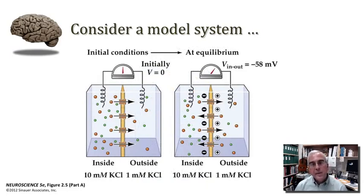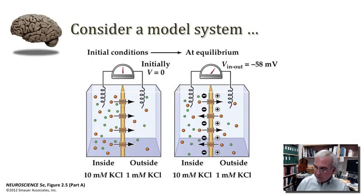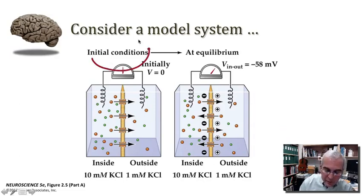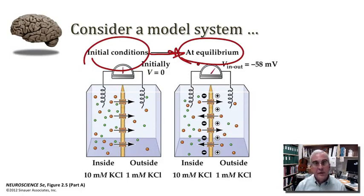Now imagine what would happen if we replaced the solution on the left side of the chamber with a 10 millimolar potassium chloride solution, so the left side has 10 times the concentration of potassium as the right. Very quickly, we would go from the initial condition to some kind of equilibrium, established as potassium ions diffuse down their concentration gradient from the left side of the chamber to the right.